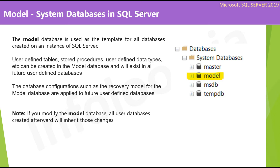Now we will understand the model system database. The model database is used as the template for all databases created on an instance of SQL Server. If we want to create some default objects in any new user database — such as tables, stored procedures, user-defined functions, or any other object — we can create them in the model database. Whenever we create a new user database, all those objects will be present in the new database. That's why we call the model database a template database. User-defined tables, stored procedures, user-defined data types, etc., can be created in the model database and will exist in all future user-defined databases. Database configuration such as the recovery model is also applied to future databases. Note: if you modify the model database, all user databases created afterward will inherit those changes.